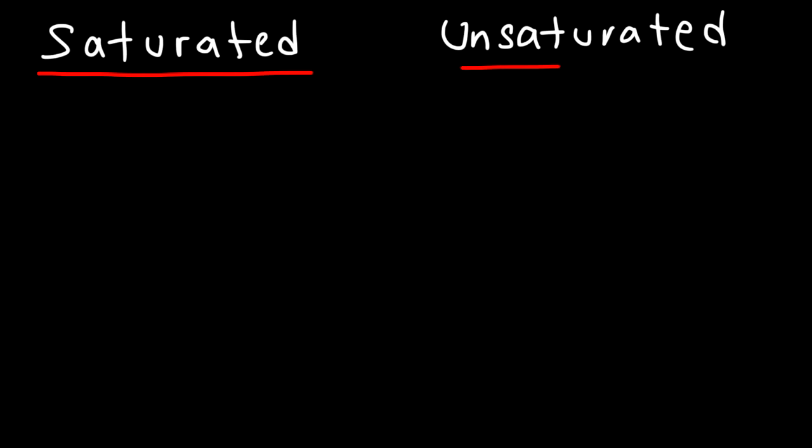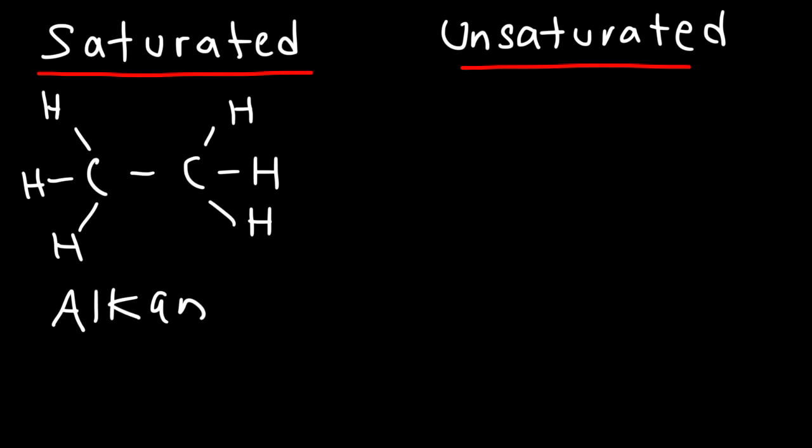Now you also need to be familiar with saturated and unsaturated hydrocarbons. So what is the difference between a saturated hydrocarbon and an unsaturated hydrocarbon? Saturated hydrocarbons are basically alkanes. They're completely filled with hydrogen atoms. They have the maximum number of hydrogen atoms per carbon atom. So anytime you have an alkane you have a saturated hydrocarbon. There are no double bonds, only just single bonds or sigma bonds.